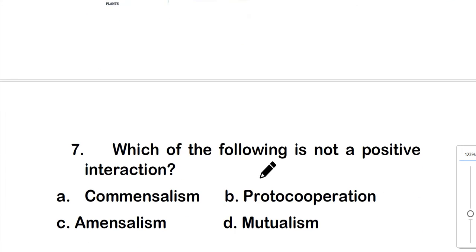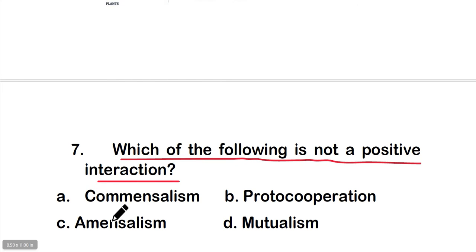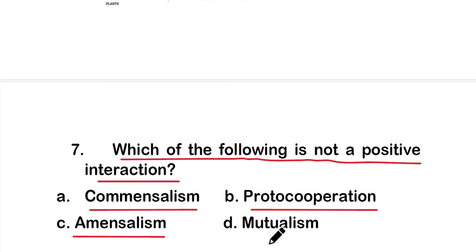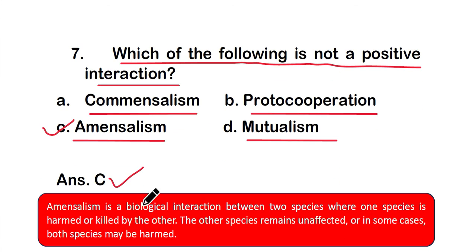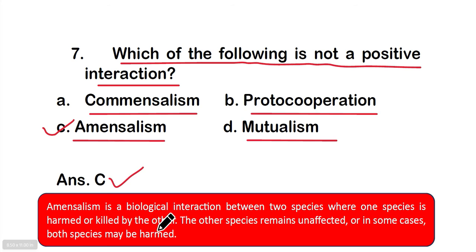Question number seven: Which of the following is not a positive interaction? Ammensalism is a biological interaction between two species where one species is harmed or killed by the other, while the other species remains unaffected — that is why it is a negative interaction, not a positive one.